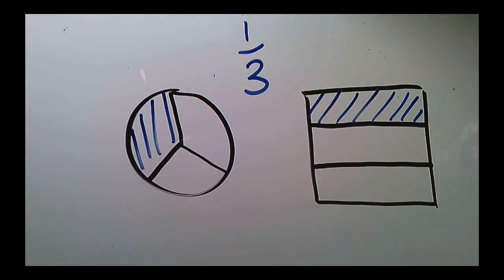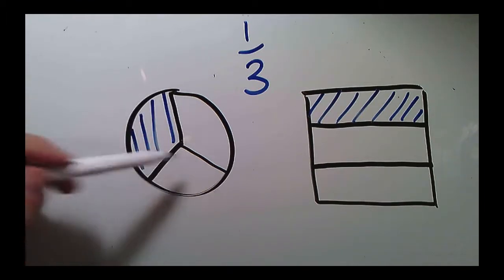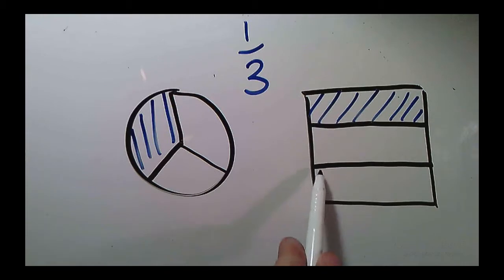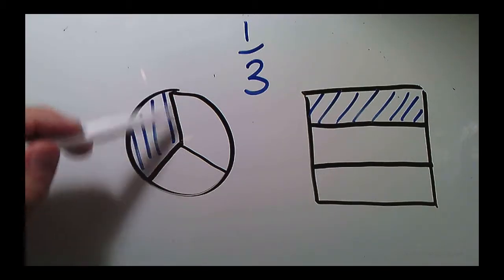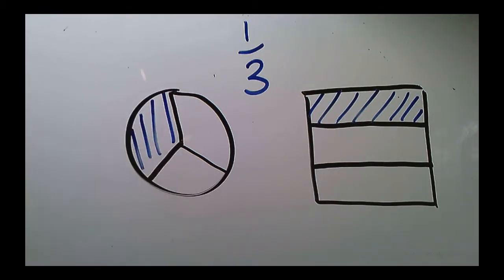So here we have two examples of 1 third, one with a circle, one with a rectangle, and as you can see, we've broken them evenly. I can just do strips across. With the circle, I use my Mercedes slash peace symbol.